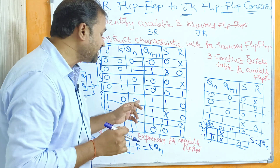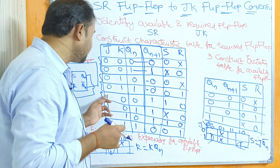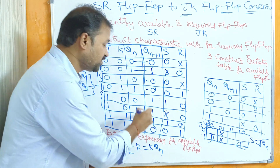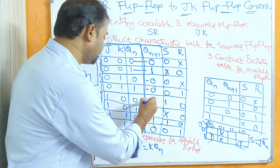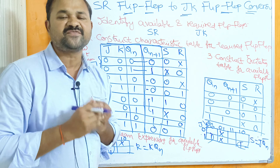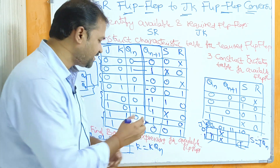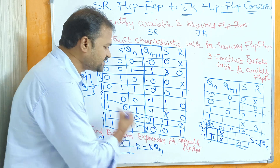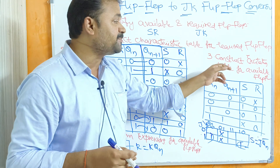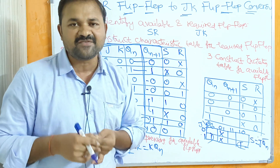When inputs are J=1, K=0, irrespective of the current state, the next state output is one, because J=1 means set, so the output is set to one. For the last two combinations where J=1 and K=1, the output will be toggled — complemented. So zero changes to one and one changes to zero. This completes step two.